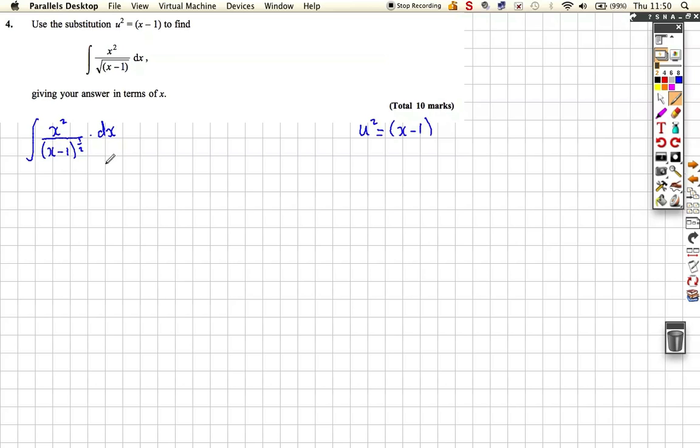So we want to replace all the x's in here. We want to turn this into an integration with respect to u using this substitution. So we need to change the dx to du and we need to change these things to u if possible. Well, to rearrange this there's a couple of ways to get, we need to differentiate this to get du/dx so we can replace dx.